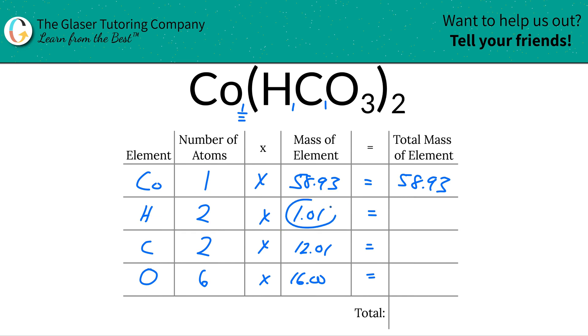For hydrogen, each hydrogen is 1.01 units of mass, but we have two of them, so the total mass is 2.02. For carbon, we do that multiplication, so that's 24.02.